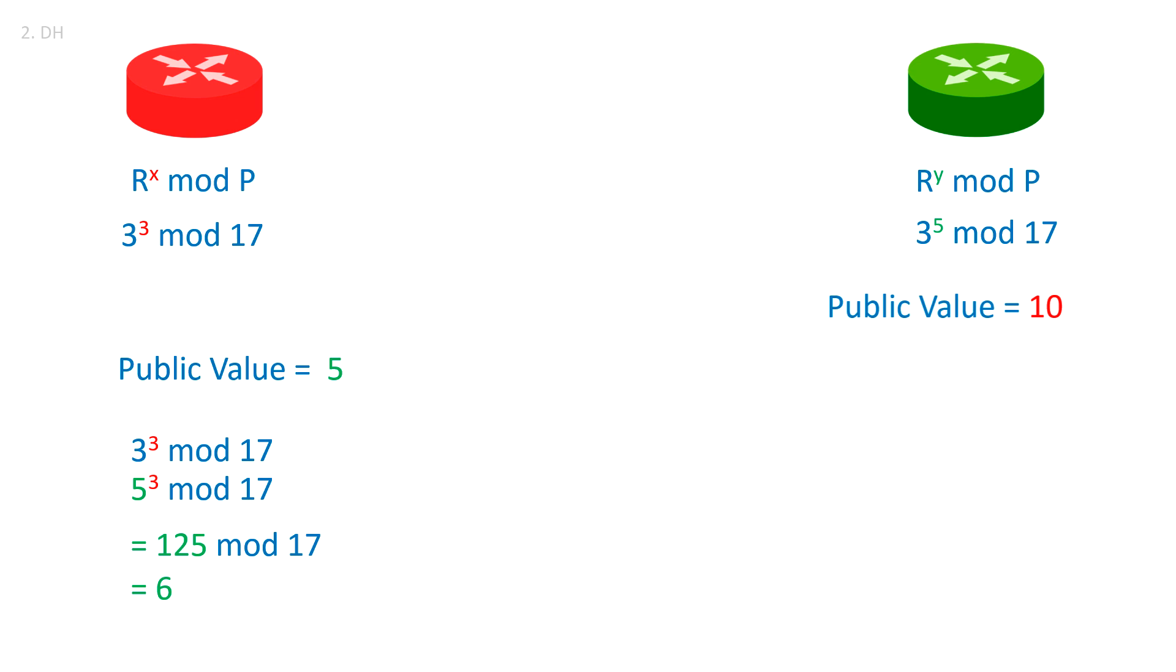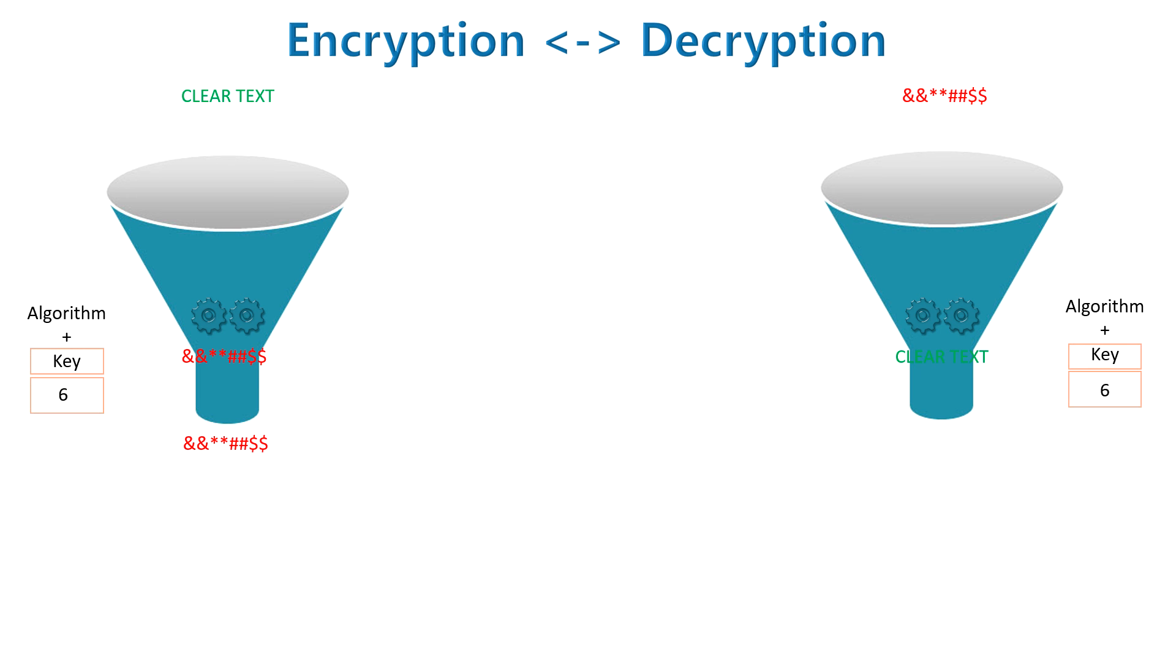Same way the green router also replace its base primitive root value from received public value from red router and find out the output. If you pay attention this number 6 is same on both router as well. Now they have generated same key for encryption which is used in encryption engine.